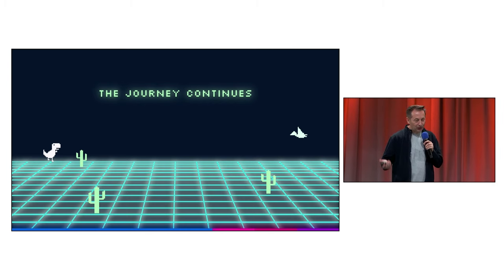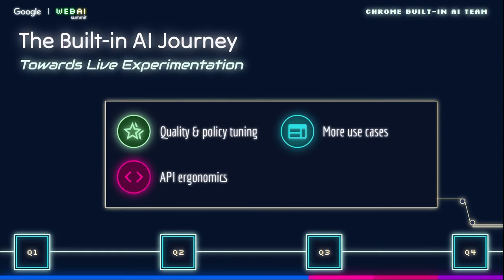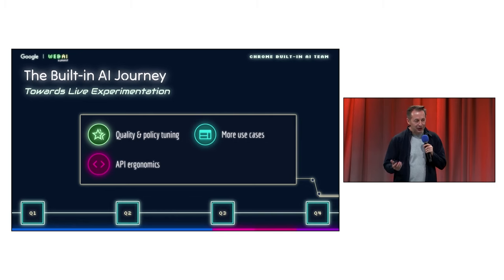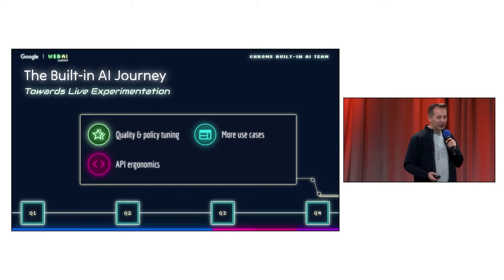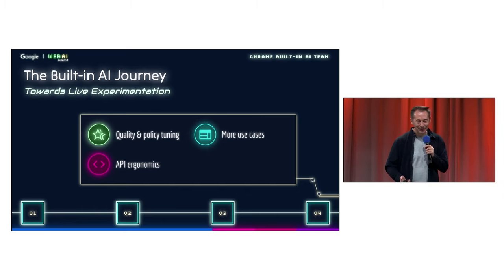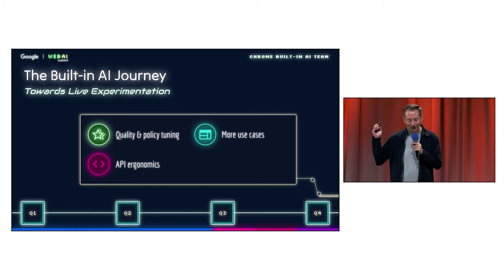We've covered a lot of ground today, but there is still a lot on the roadmap. We want to get those APIs production-ready — that means more effort on quality, but also the safety aspect. We also want to make sure they are easy to use and smooth, so if you have feedback on the API shape, now is the best time. We still want to hear about more use cases we should look into. And there's one more thing I'm super excited about: the Chrome Built-in AI Challenge. If you have ideas about how to use these APIs, there will be prizes. We're also looking for feedback on the API and quality, with rewards for that too.